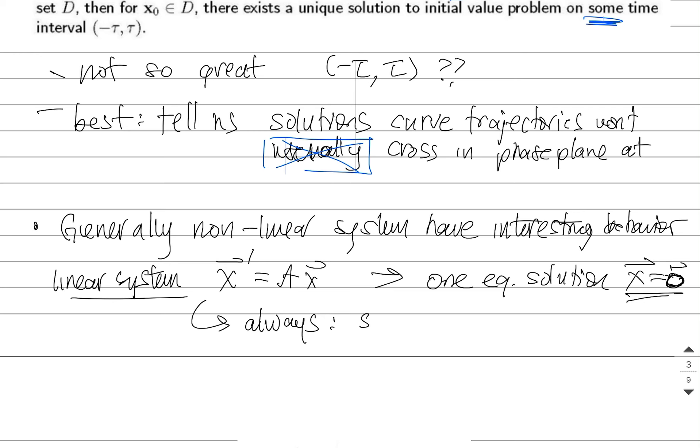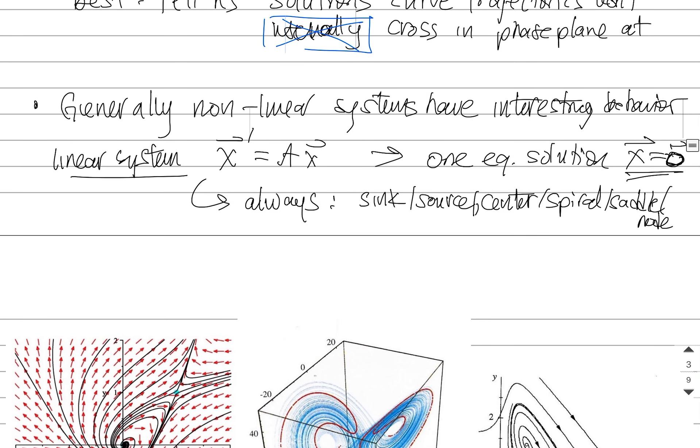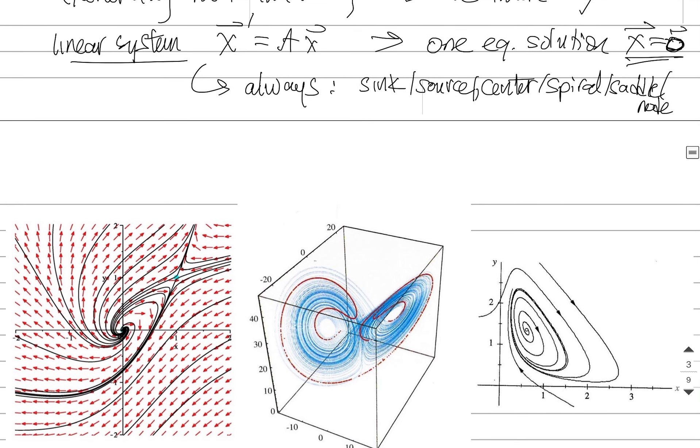And in this case, it's always going to be one of the following. It's always going to be either a sink or a source, perhaps a center, perhaps a spiral, perhaps a saddle, and perhaps one of these nodes. We went through all of those different cases in the previous topics, right? But non-linear systems are more interesting.